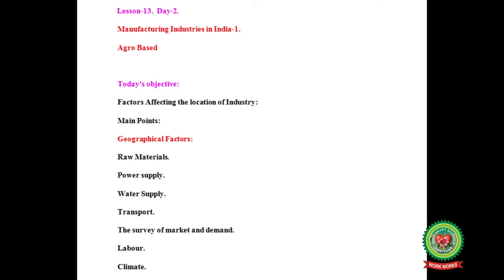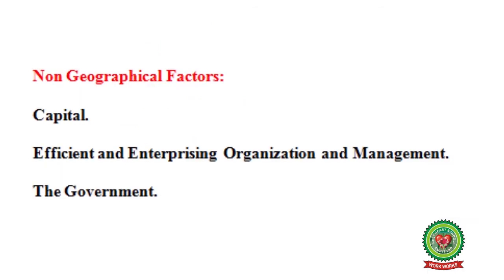The main points are geographical factors. Under geographical factors we have raw materials, power supply, water supply, transportation, survey of market and demand, labor and climate. Non-geographical factors include capital, efficient and enterprising organization and management, and government.